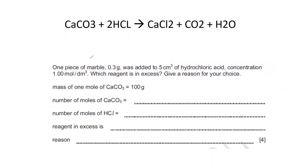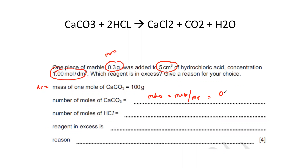Next question on limiting and excess reagents: one piece of marble of 0.3 grams was added to 5 cm³ of hydrochloric acid of concentration 1 mol/dm³. The molar mass of calcium carbonate is given as 100. First, we find the moles of calcium carbonate: moles = mass ÷ molar mass = 0.3 ÷ 100 = 0.003 moles of CaCO₃.